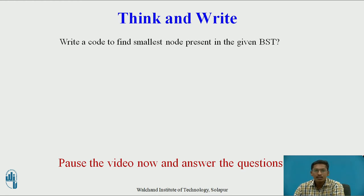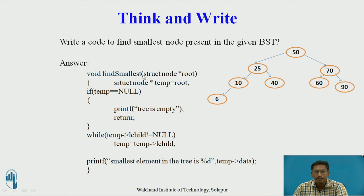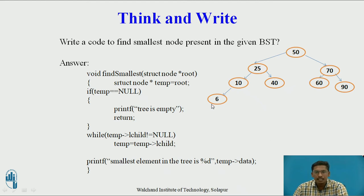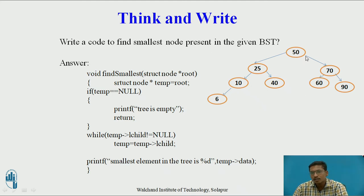You can pause the video and try to answer: write a code to find the smallest node present in a given binary search tree. The answer: first, identify where the smallest node is located. In a binary search tree with 50 as root, the smallest node is 6, located on the leftmost side. So if you traverse from root to the leftmost node, that leftmost node is the smallest. Similarly, for the largest node, go from root to the rightmost node — in this case the maximum is 90.